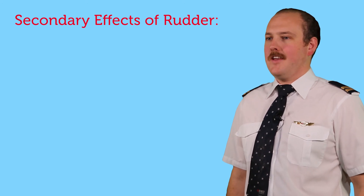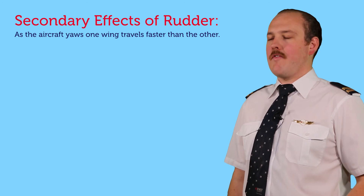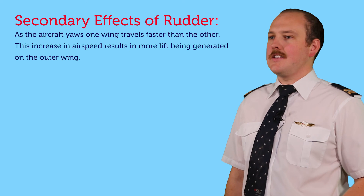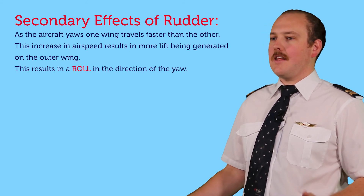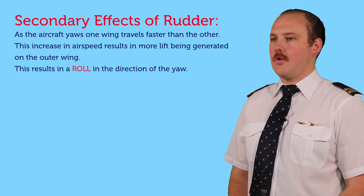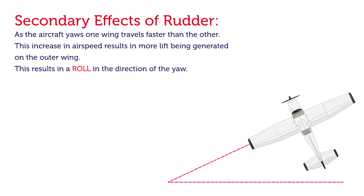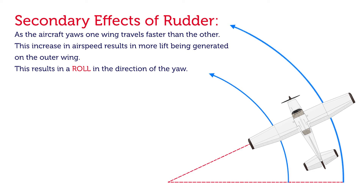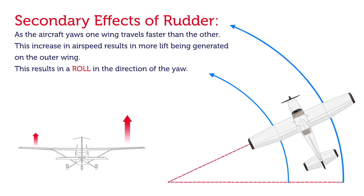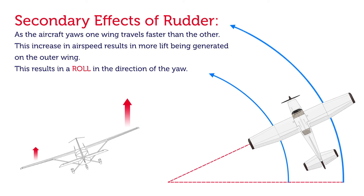The secondary effect of rudder is roll. As the aircraft yaws, one wing travels faster than the other. The increased indicated airspeed generates more lift on the outer wing, causing the aircraft to roll. As shown in the diagram, when turning left, the inboard wing travels a lesser distance than the outboard wing, so the outboard wing must increase its airspeed. Using the pilot's lift formula — lift is proportional to angle of attack times indicated airspeed — with angle of attack kept constant, the increasing airspeed of the outer wing produces greater lift, causing the aircraft to roll to the left.